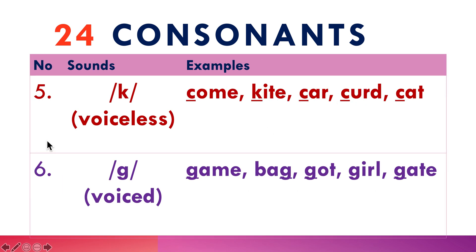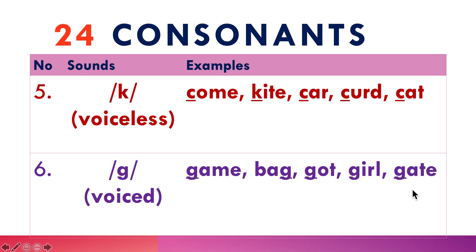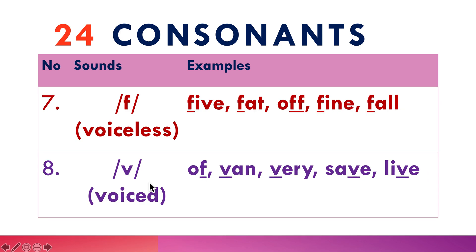Number five: /k/ is voiceless — as in come, kite, car, code, cat. Number six: /g/ is voiced — as in game, bag, got, gold, gate. See the difference between the voiceless /k/ and the voiced /g/.